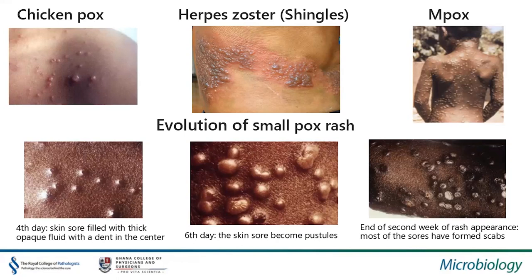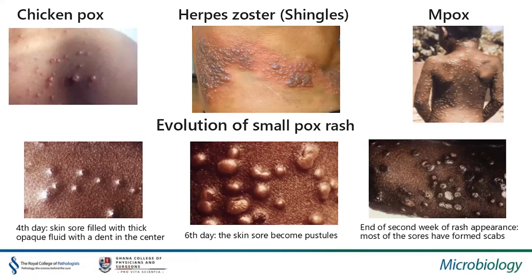Shingles is herpes zoster, which often occurs as a reactivation of the virus that remained dormant in the dorsal root ganglia during the primary infection. It can occur at any age. The main feature is debilitating pain from the vesicles, distributed along the dermatome — it is really very painful. Post-herpetic neuralgia is a long-term complication. In immunocompromised patients, it can disseminate all over the body, affecting different parts.